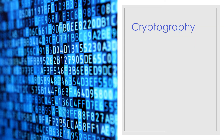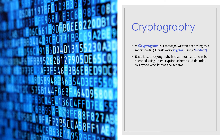What is cryptography? A cryptogram is a message written according to a secret code. It came from the Greek word 'cryptos' which means hidden. The basic idea of cryptography is that information can be encoded using an encryption scheme and decoded by anyone who knows the scheme.